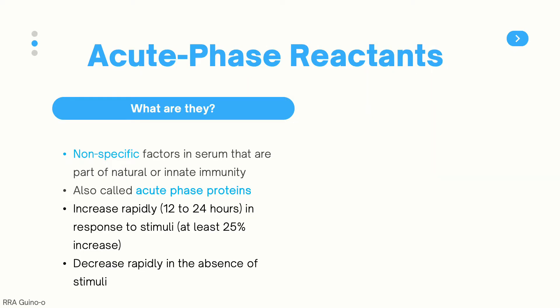So what are acute phase reactants? They are non-specific factors in the serum that are part of our natural or innate immunity. They can also be called acute phase proteins. They are called acute phase because they increase rapidly within 12 to 24 hours in response to stimuli, and the increase must be at least 25%. They also decrease rapidly in the absence of stimuli.